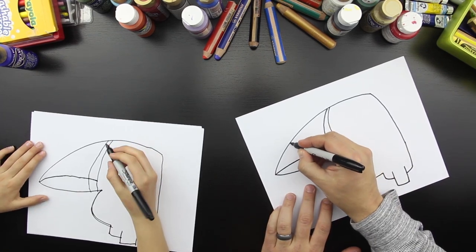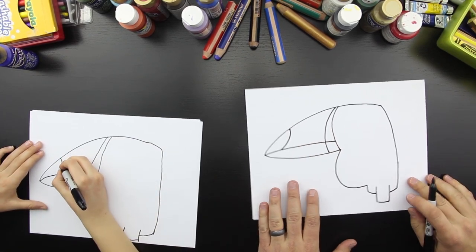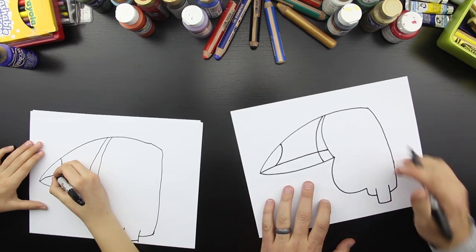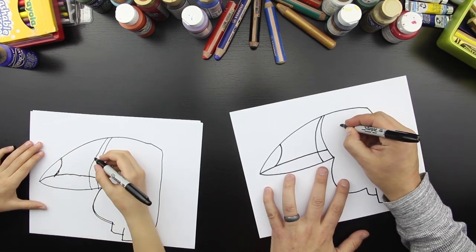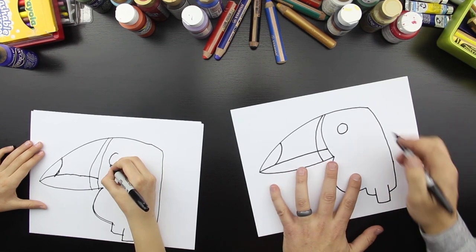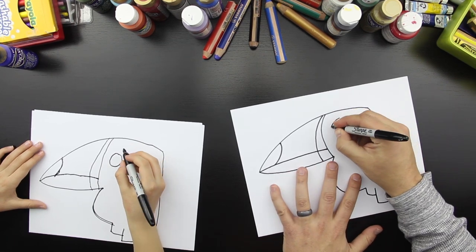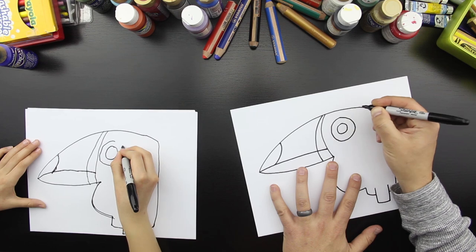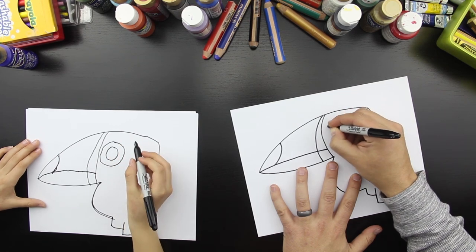And then we're going to draw a curved line over here. Perfect. Let's draw one circle, kind of small. Then let's draw a bigger circle. Then let's draw another circle.